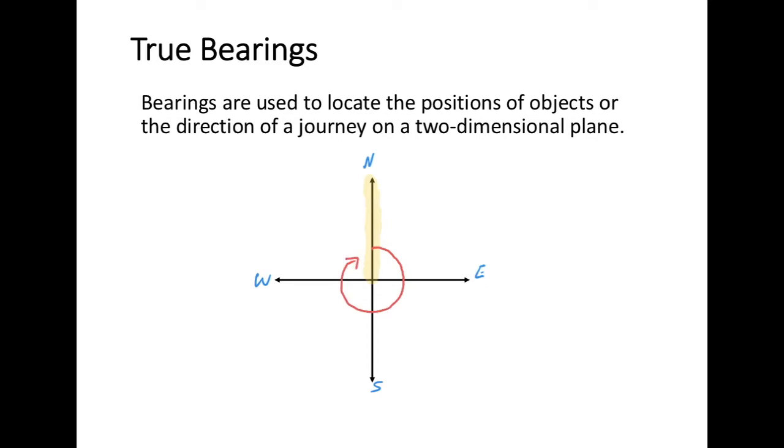True bearing measurements go from 0 up to 360 degrees as they work their way around a compass.